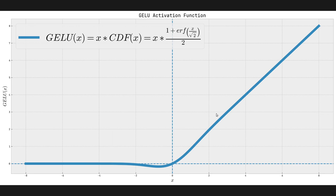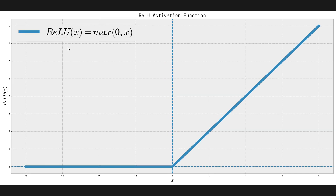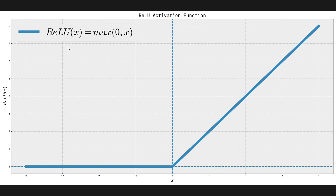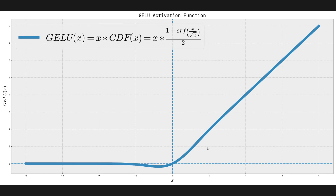Looking at the plot, the first thing we notice is that it's very similar to the ReLU activation function — the name itself kind of hints at that. We can alternate between these two and see that GELU is like a smoother variant of ReLU. ReLU is pretty much two lines joined at the center point, but with GELU we have a smooth transition with a little dip that comes back up.